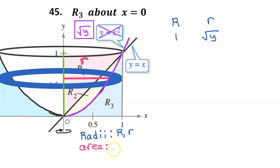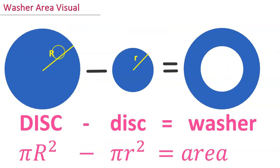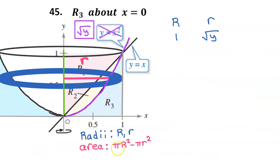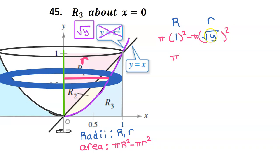So that was step one. Step two is to find an expression for the area of the washer. You can picture the area of a washer as the area of a big disc minus the area of a small disc. In other words, the area of a washer will be pi big R squared minus pi small r squared. Since we already have an expression for big R and small r, we can write pi big R squared minus pi small r squared. Let's simplify: one squared is just one, so we have pi. If you square a radical, the radical and the two cancel each other out, so that just leaves y.